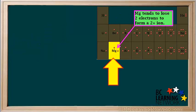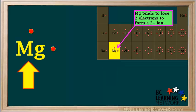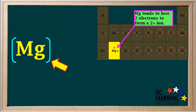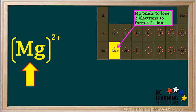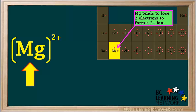Magnesium has two valence electrons, so it tends to lose these two electrons and form an ion with a charge of 2+. The magnesium atom will lose these two valence electrons. Because it lost two electrons, it has become a positive ion, so we draw square brackets around it and add a 2+ charge on the top right of the bracket. Notice the symbol for magnesium does not have any electrons around it, since it lost both of the electrons in shell 3.